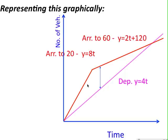And this is the number of vehicles that have departed, or have been able to depart. So, the difference is the number of vehicles that are sitting in the queue at that given time.